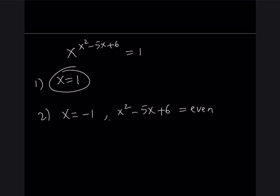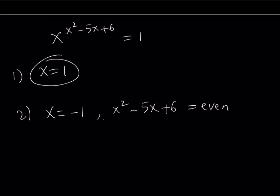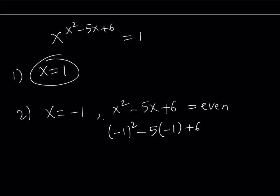But let's still check that. So let's go ahead and replace x with negative 1. If I replace x with negative 1, I'm getting negative 1 squared minus 5 times negative 1 plus 6. This gives me 1 plus 5 plus 6, and that's equal to 12. And as you know, 12 is even. So x equals negative 1 is a valid solution as well.